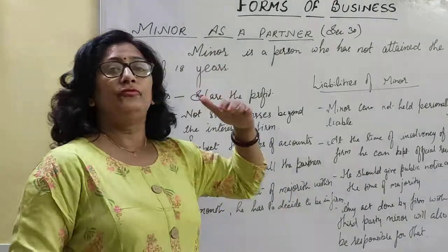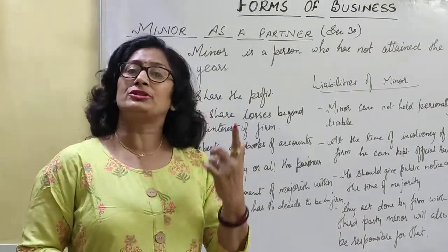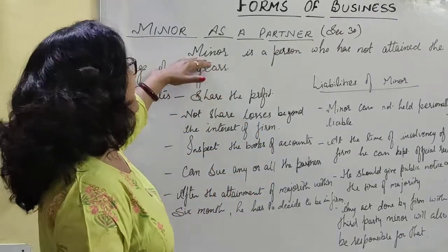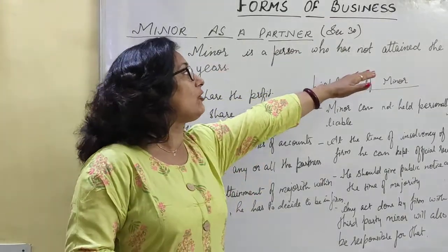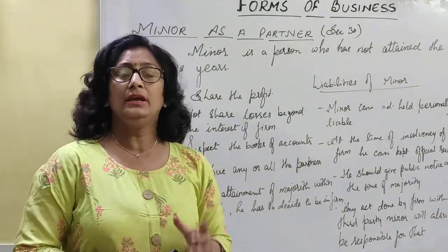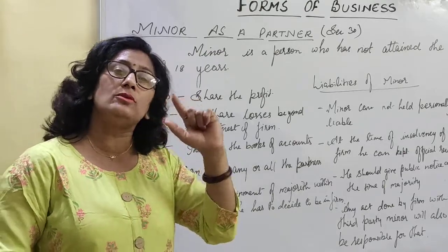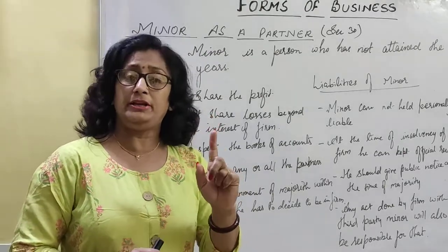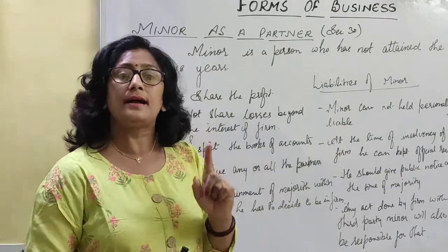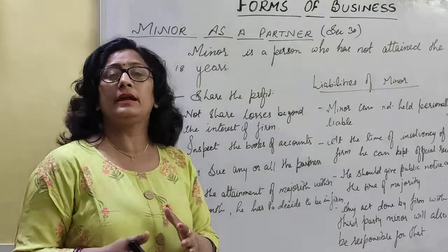First of all, as I am explaining 'minor,' a question arises in the mind — what is a minor? Minor kya hota hai? A minor is a person who has not attained the age of 18 years. Koi bhi aisa person jo ki 18 saal se kam umr ka ho, woh minor kehlata hai.